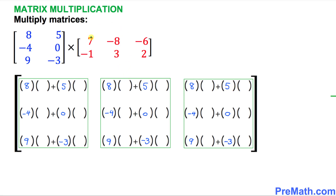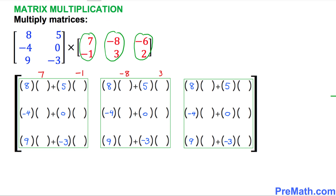Now let's shift our attention to the right hand side red matrix. The first column, 7 and negative 1, we are going to make this column into a row, writing it as 7, negative 1. Next, negative 8 and 3 become a row as well. And finally, the column negative 6, 2 is placed as a row. Then we filter 7 across the top row, and negative 1 across as well.